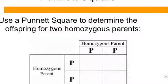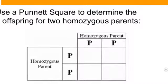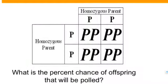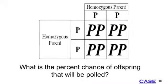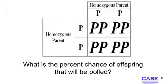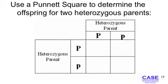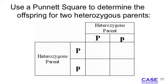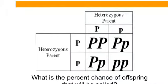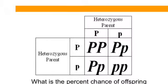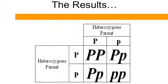We set up a Punnett square and put these letters in each box. The first one is big P, big P — that's a polled animal. The second and third are big P, little P — those are polled animals. The last one is little P, little P — that is going to be a horned animal. Hopefully, that's enough information to get you started on your assignment.